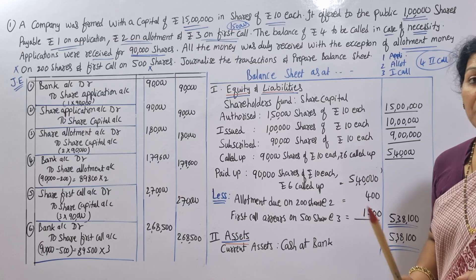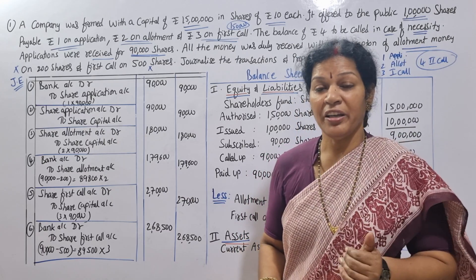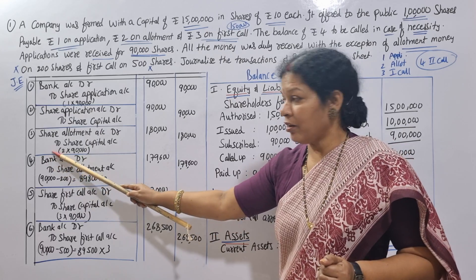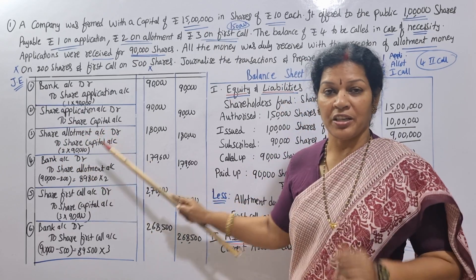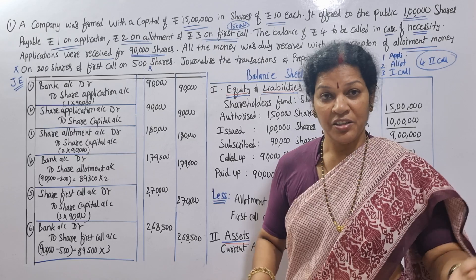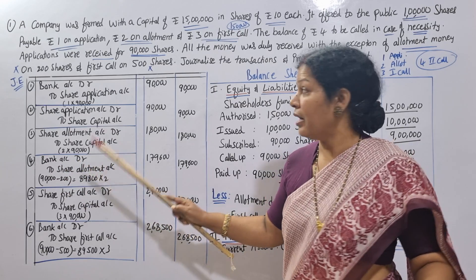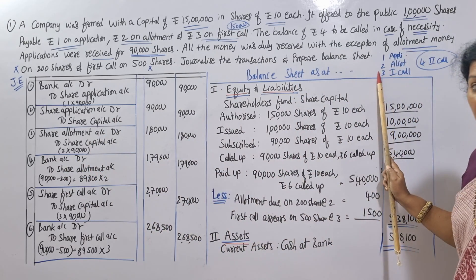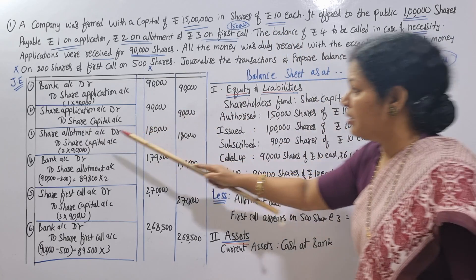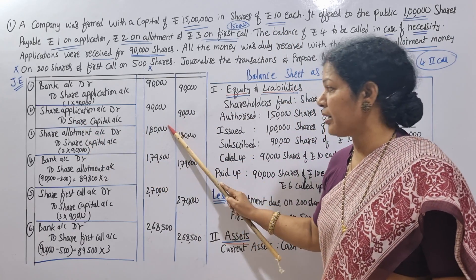Next is the allotment entry. Share Allotment Account Dr. to Share Capital Account. The allotment amount is 2 rupees per share. Total shares allotted: 90,000. So 90,000 × 2 = ₹1,80,000.